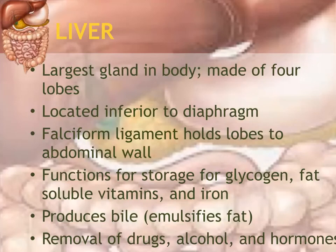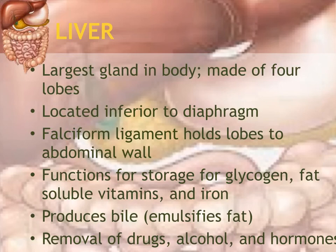The term for liver is hepatic. The hepatic portal vein is a network of blood vessels that send blood from the intestines to the liver. Any food contaminated with drugs, alcohol, hormones, bacteria, viruses, or other pathogens passes through the hepatic portal vein into the liver to be cleaned up before being transported to the heart and distributed to the rest of the body.